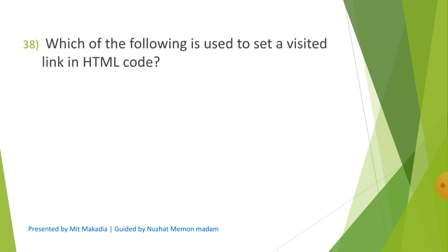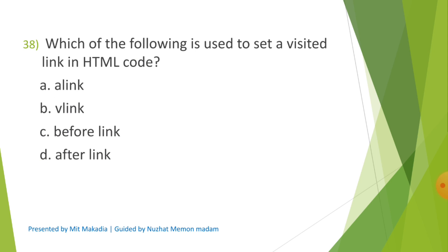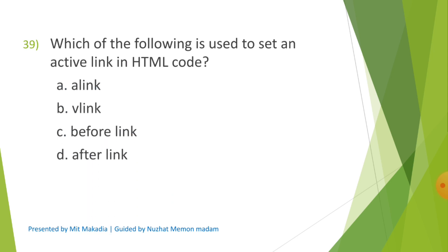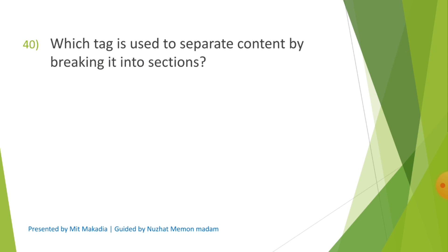Question 38: Which of the following is used to set a visited link in HTML code? Options are A) A link, B) V link, C) Before link, D) After link. Question 39: Which of the following is used to set an active link in HTML code? Options are A) A link, B) V link, C) Before link, D) After link. Question 40: Which tag is used to separate content by breaking it into sections? Options are A) BR tag, B) HR tag, C) P tag, D) All of these.